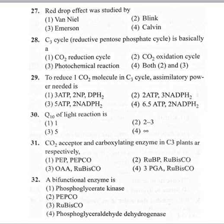Coming to the 32nd question: a bifunctional enzyme is option 1 phosphoglycerate kinase, option 2 PEP carboxylase oxygenase, option 3 RUBISCO, option 4 phosphoglycerol dehydrogenase. The bifunctional enzyme is RUBISCO, since RUBISCO can bind to both carbon dioxide and oxygen. So RUBISCO is the correct answer.